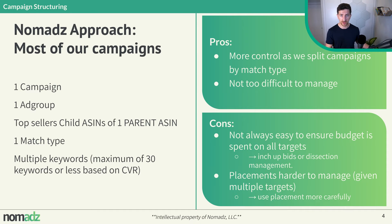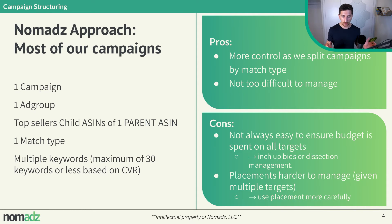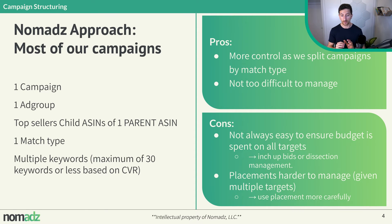We have other videos on our YouTube channel about conversion rate analysis. The idea is that the lower the conversion rate, the lower the number of keywords. If our product has a conversion rate of 5%, we get five orders across 100 clicks, so we must make sure we don't have too many keywords — otherwise we'll never concentrate enough clicks to generate orders. So for most of our campaigns: one campaign, one ad group, top seller child ASINs of one parent ASIN, one match type, a maximum of 30 keywords or less based on conversion rate.